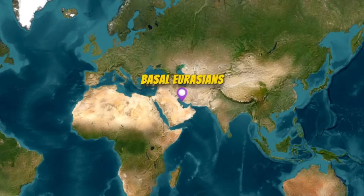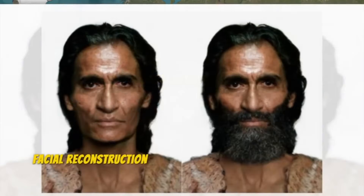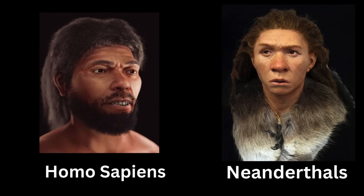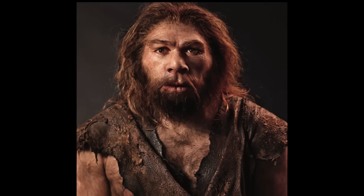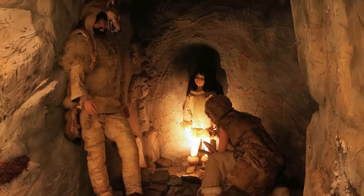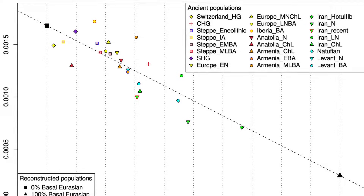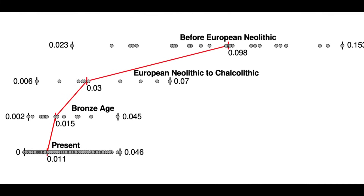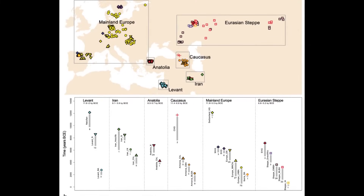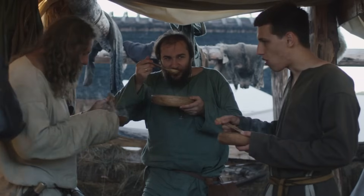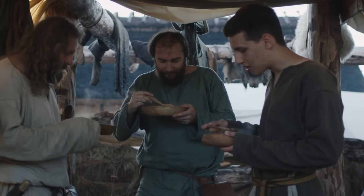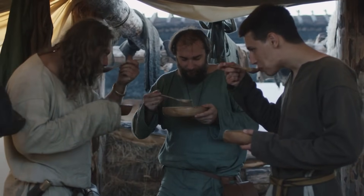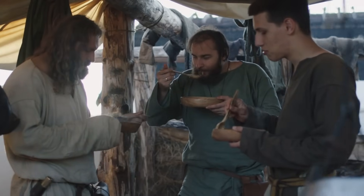The Basal-Eurasian population represents one of paleoanthropology's most intriguing genetic mysteries. This ancestral group diverged from other non-African populations approximately 45,000 to 60,000 years ago, significantly before the documented admixture between Neanderthals and Homo sapiens. Genetic analyses conducted by Lazaridis first identified this distinct ancestry component when examining ancient genomes from early Anatolian farmers, who carried approximately 40 to 50% Basal-Eurasian ancestry.